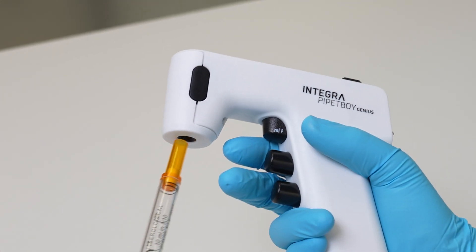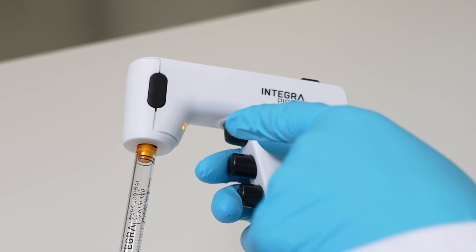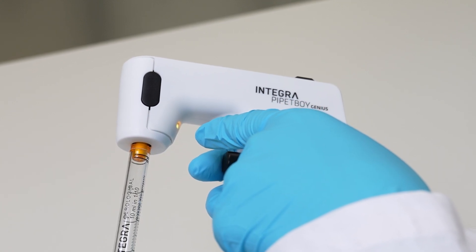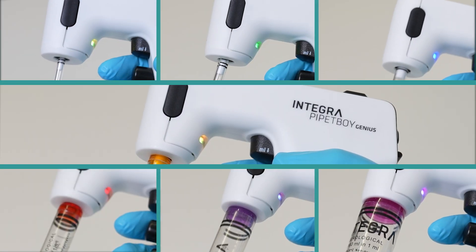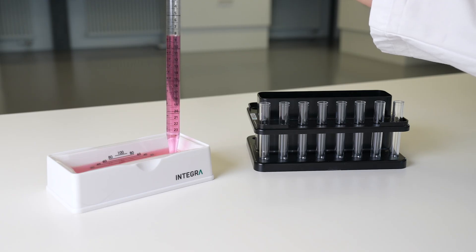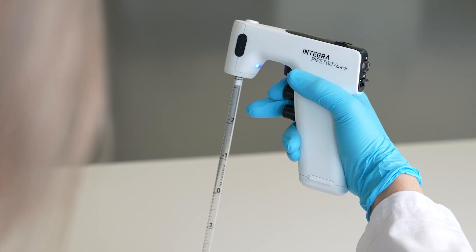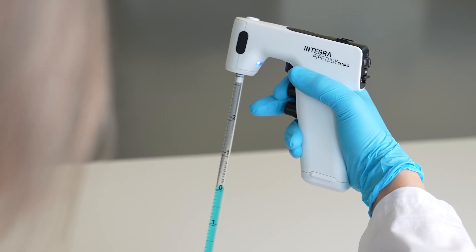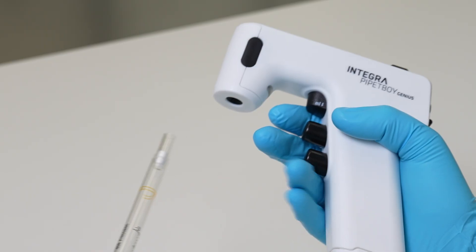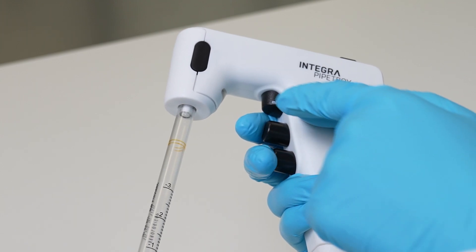Any serological pipette can be used, but when using Integra pipettes specifically, the indicator will light up the same color as the pipette to show that the Pipette Boy Genius has detected the correct pipette volume. Using Integra pipettes allows you to use the unique repeat dispense mode and benefit from overfill protection. Other brands of pipettes will not be detected but can still be used in manual mode.